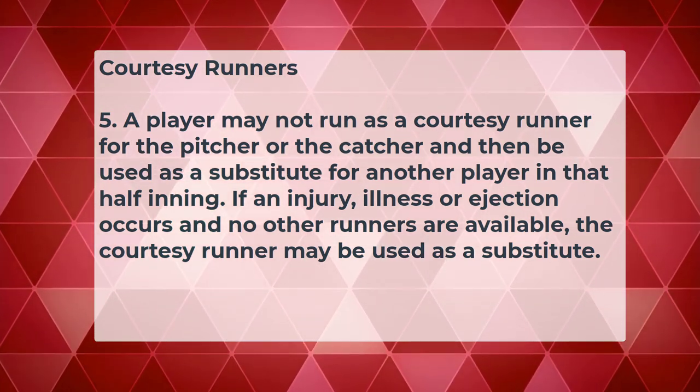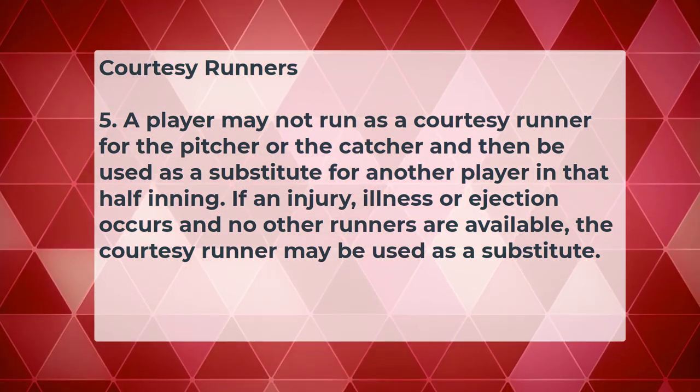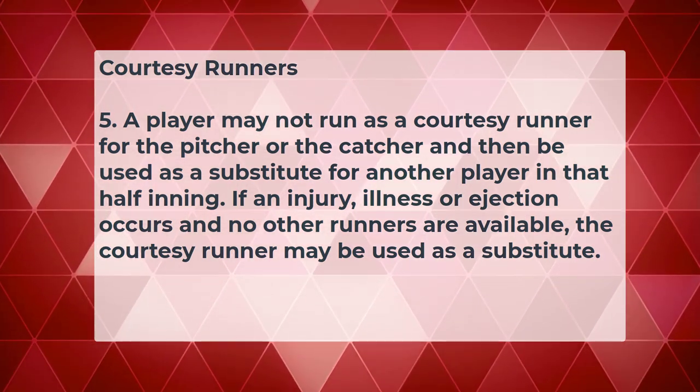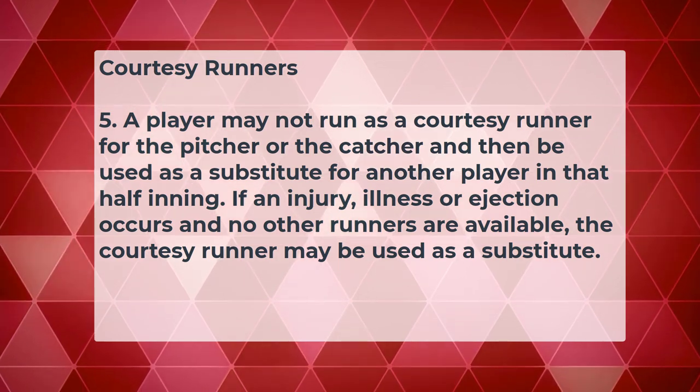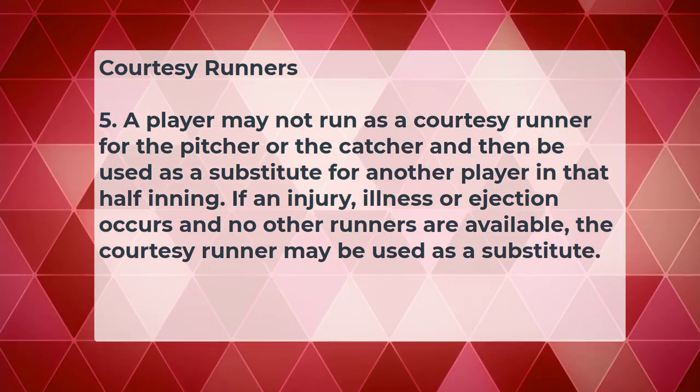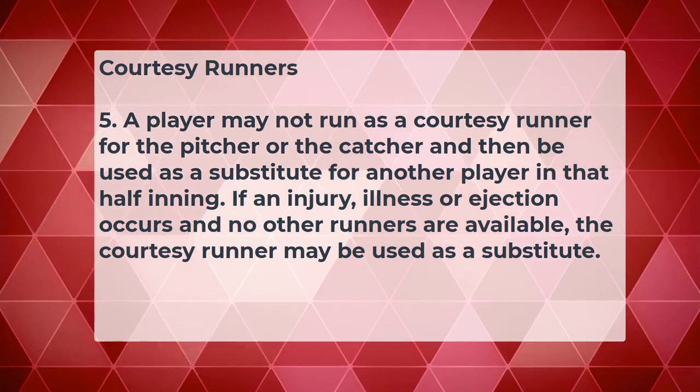Rule five: a player may not run as a courtesy runner for the pitcher or the catcher and then be used as a substitute for another player in that half inning. If an injury, illness, or ejection occurs and no other runners are available, the courtesy runner may be used as a substitute. If a player goes in as a courtesy runner during that inning they can't be used as a substitute during the same inning, unless there are literally no other players available.